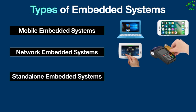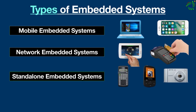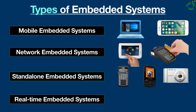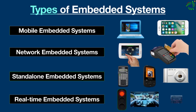Stand-alone embedded systems are not reliant on a host system. Like any embedded system, they perform a specialized task, but they do not belong to a host system unlike other embedded systems. Examples are calculators, MP3 players, digital cameras, and home appliances such as refrigerators, washing machines, and microwaves. Finally, real-time embedded systems give the required output within a defined time interval. They are often used in medical, industrial, and military sectors because they handle time-critical tasks. Examples include traffic control systems, self-driving vehicle controls, aircraft control systems, medical devices, and patient monitoring systems.